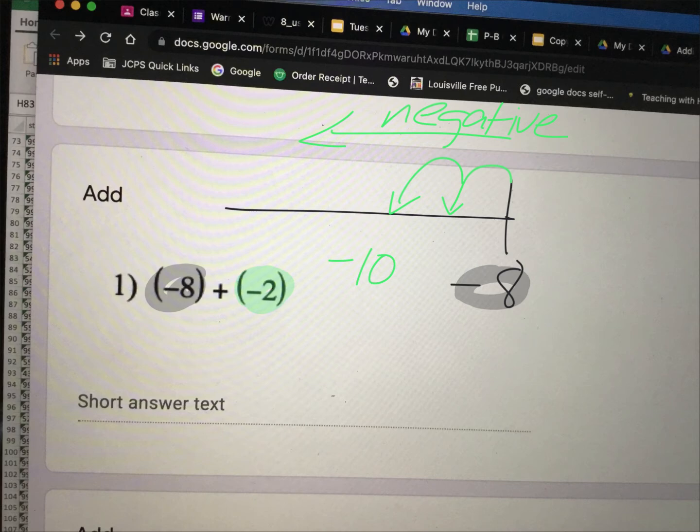And another way to think about it is that you're adding 8 negatives to two more negatives. So you have a total of 10 negatives. So you're just combining those two negatives together.